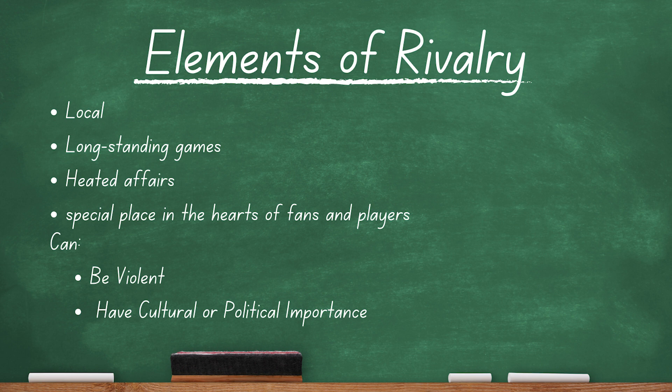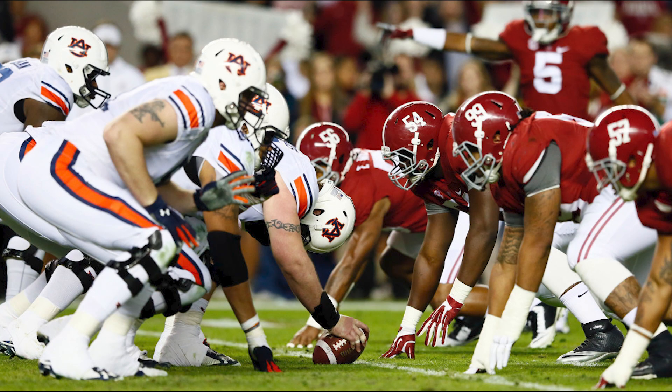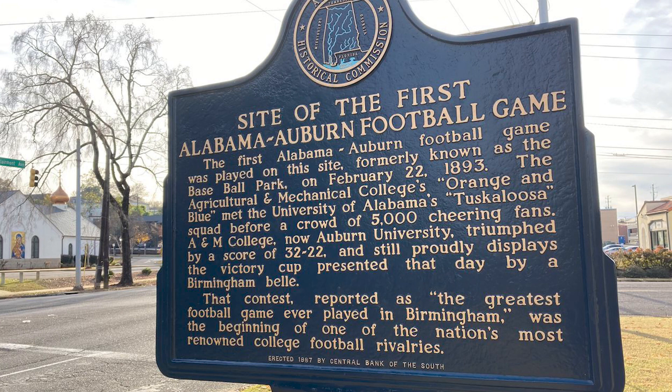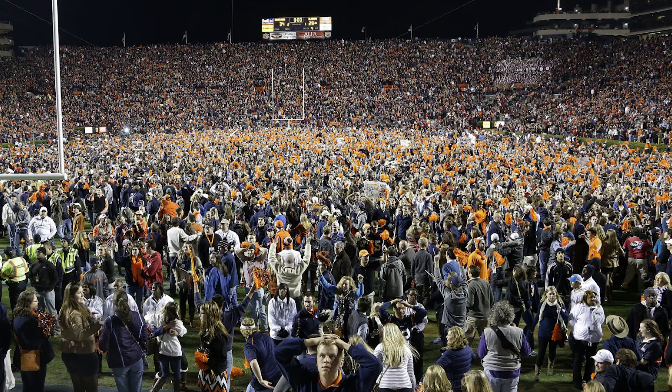Let's look at one well-known college rivalry and apply these elements to it: the Iron Bowl, or Alabama vs. Auburn. Alabama and Auburn are both located in the state of Alabama — local teams, check. The first meeting between the two was in 1893 and they've played 87 times — longstanding, check.